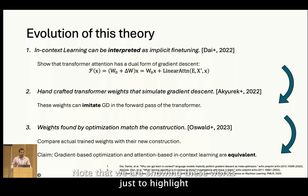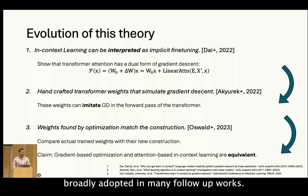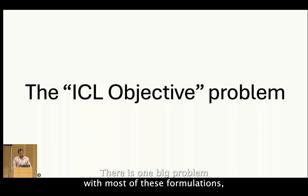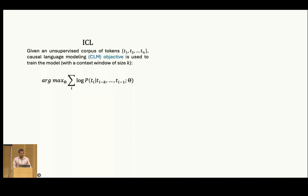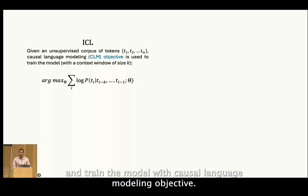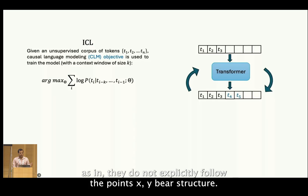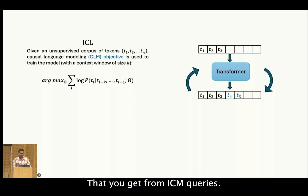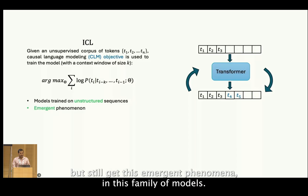Note that we highlight these works to surface the original ideas in this domain, but their setup is now broadly adopted in many follow-up works. There is one big problem with most of these formulations: the ICL objective used to train their transformers. ICL as we understand it emerges in models trained with a causal language modeling objective — you take an unstructured sequence of tokens and train the model to predict the next token, unstructured meaning they do not explicitly follow the X-Y pair structure of ICL queries. So you never train the model to understand the ICL structure, but still get this emergent phenomenon.